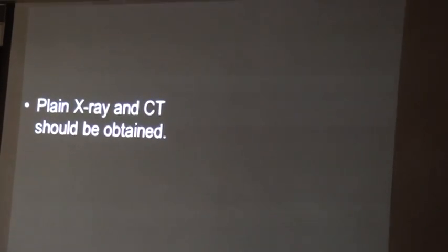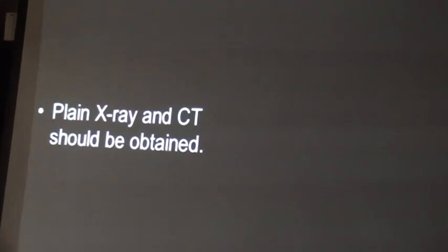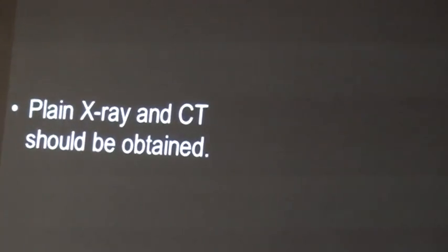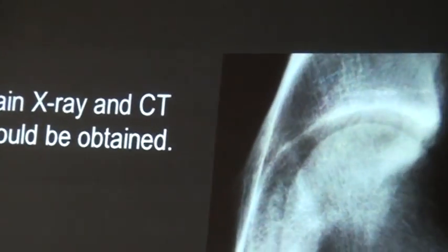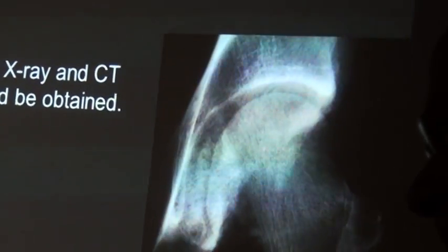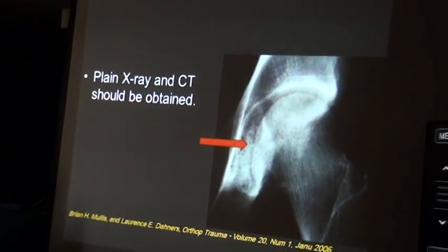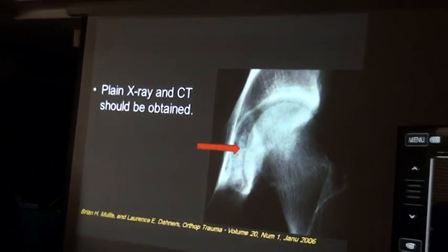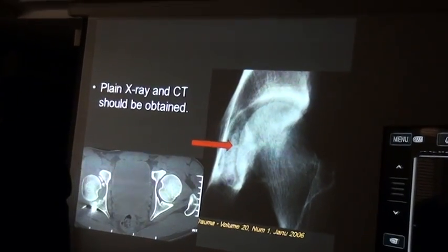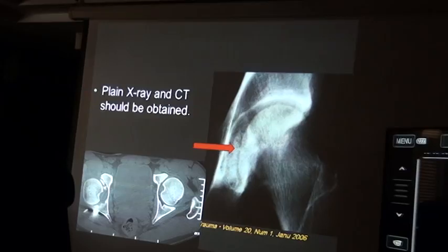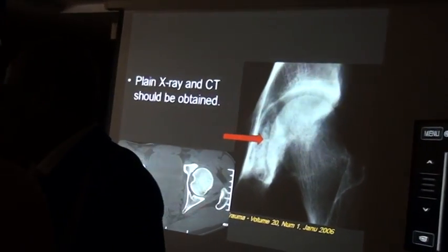X-ray and CT should be done following every case of closed reduction of hip dislocation. Here, the X-ray shows loose bodies inside the hip joint, and this is the CT of the same patient. From here, this is the loose body visible on imaging.